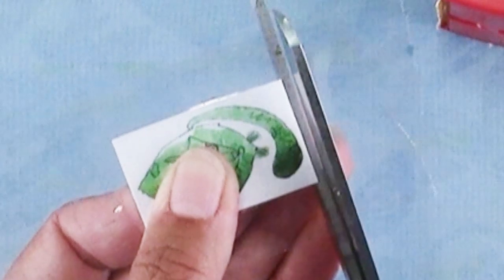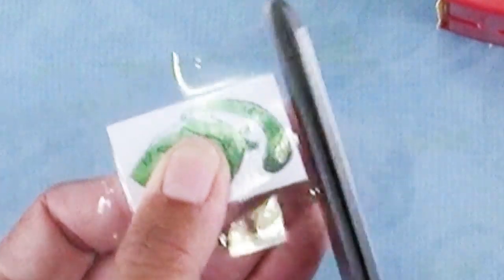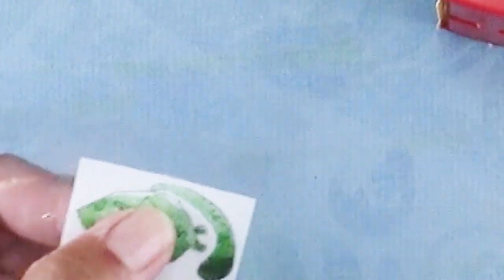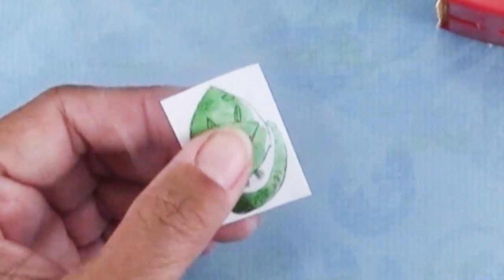Now you're going to trim leaving a little tiny border of tape outside the edge of your paper.